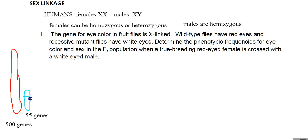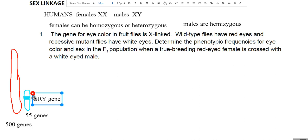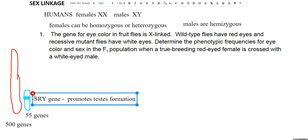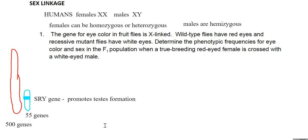There is one very important gene found on the Y chromosome — the SRY gene — located at a specific locus on the Y. The SRY gene is very important in sex determination. It promotes testes formation by creating proteins that turn on other genes leading to testes development. If this gene is not present or is silent, testes will not form and the default will be the formation of ovaries. So it is the SRY gene that is important for maleness.